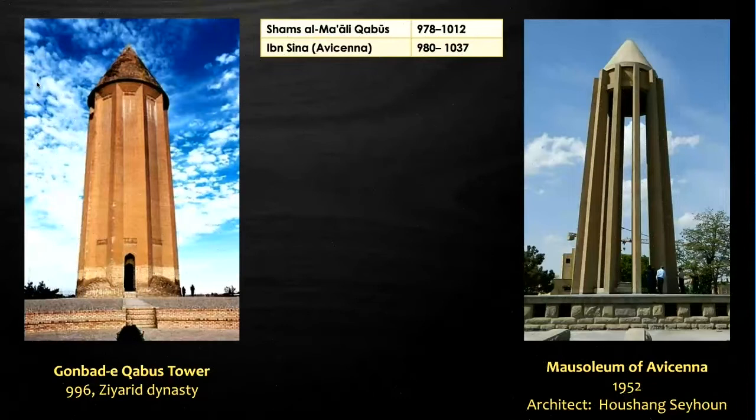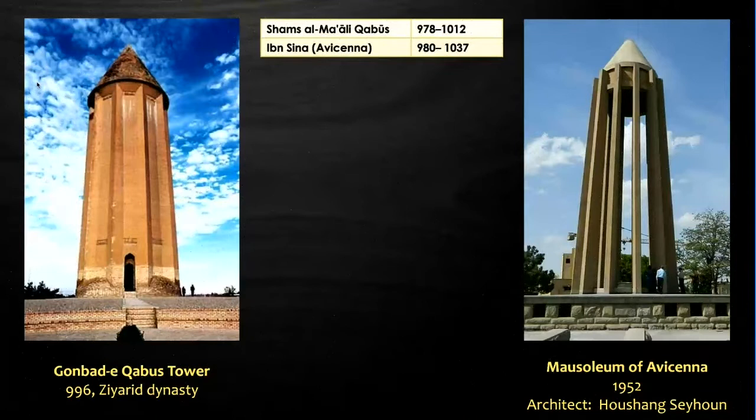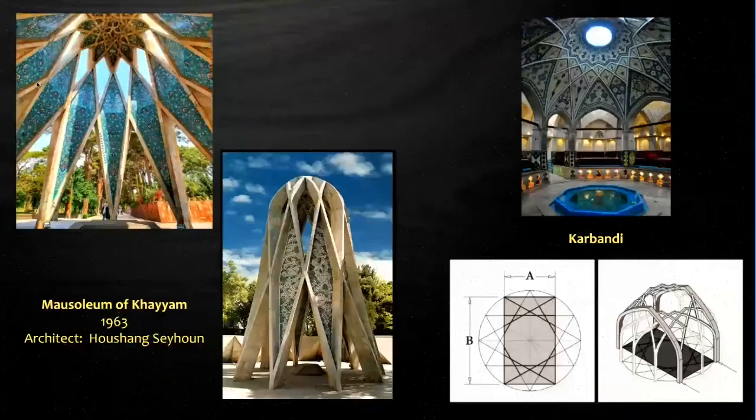The tower of the Avicenna mausoleum designed by Sehun has been constructed with cement and pieces of hardstone. In Sehun's design for Avicenna's tomb, not only the architectural language of prominent modern architects such as Frank Lloyd Wright, but also the legacy of traditional Iranian architecture can be observed. Moreover, he created monuments that manifest the mystical and philosophical character of Avicenna.